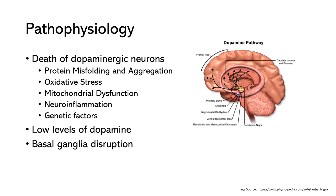Oxidative stress refers to an imbalance between the production of harmful reactive oxygen species, or ROS, and the ability of cells to neutralize them. Dopaminergic neurons are particularly susceptible to oxidative stress.